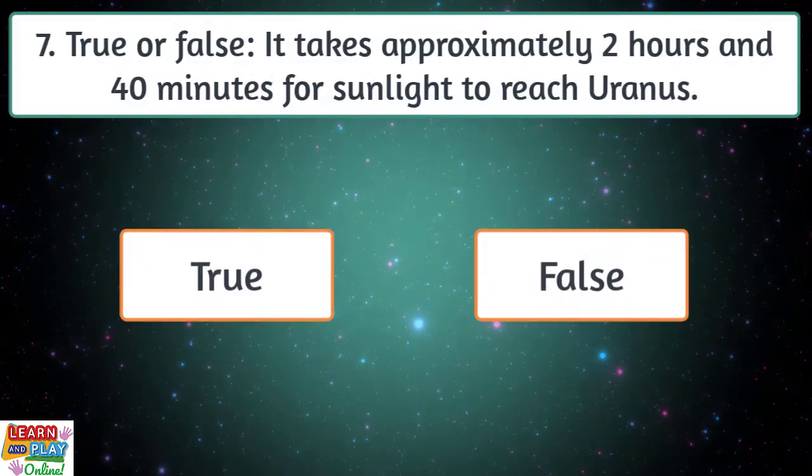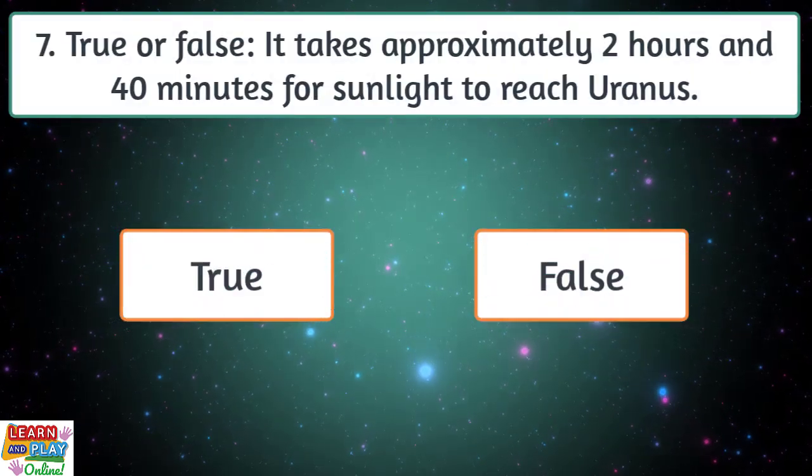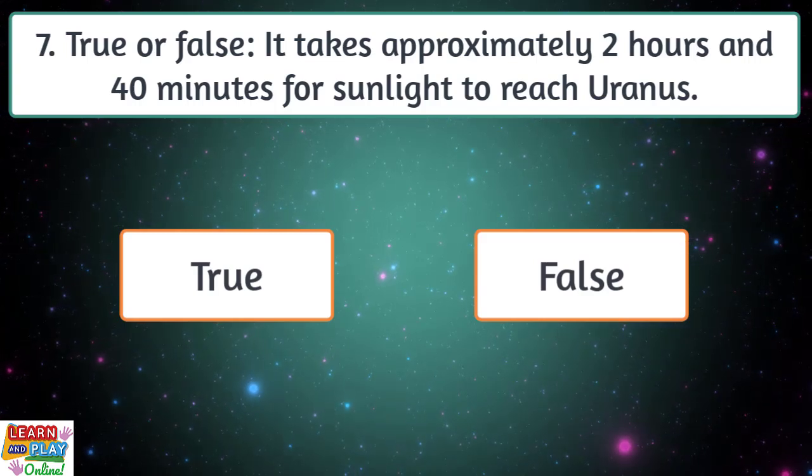Question 7. True or false? It takes approximately 2 hours and 40 minutes for sunlight to reach Uranus.